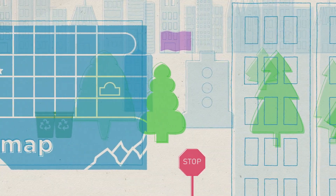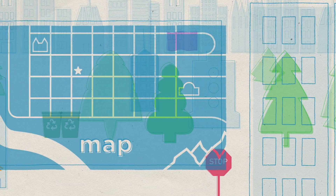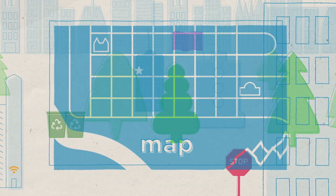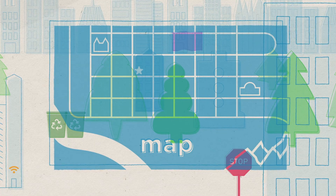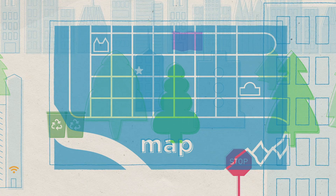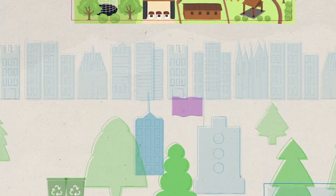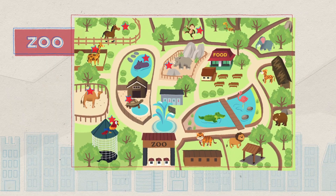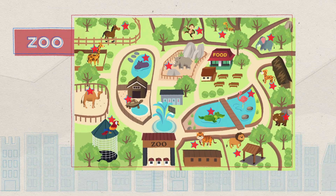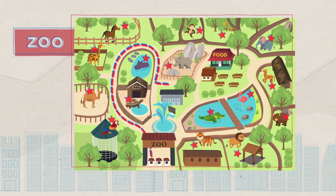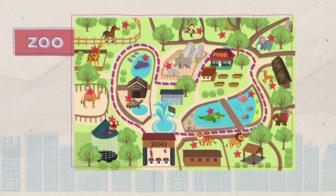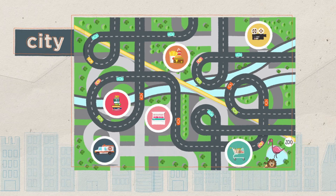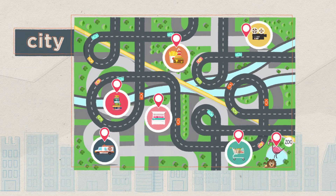Symbols are used to communicate something on maps, too. A map shows a specific area, including the places and landmarks that are found there. For example, the map of a zoo shows where each type of animal is found and the paths you can take to walk through the zoo. A street map of a city shows all of the roads and landmarks in the city.